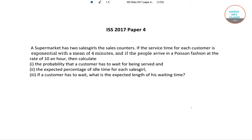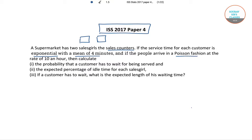Hello students, welcome to Soros's classes. In this video I will be solving the following question from ISS 2017 paper 4. In a supermarket there are two sales counters with a salesman in each. The service time for each customer is exponential with mean of four minutes. People arrive in Poisson fashion at the rate of 10 per hour. We have to calculate: the probability that a customer has to wait, the expected percentage of idle time for each sales girl, and if a customer has to wait, the expected length of his waiting time.